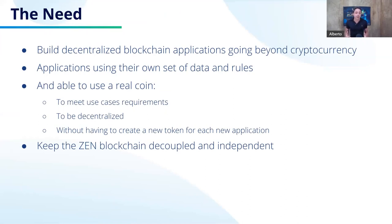The need is to build decentralized blockchain applications that go beyond cryptocurrency. We mean applications that are able to use their own set of data and rules, but also they have to be able to use a real coin. Because in most use cases you will need to transfer some value — for example, if you have to sell something, transfer ownership, you have to pay for it. So it's important that each application has the possibility to transfer some tokens with a real value.